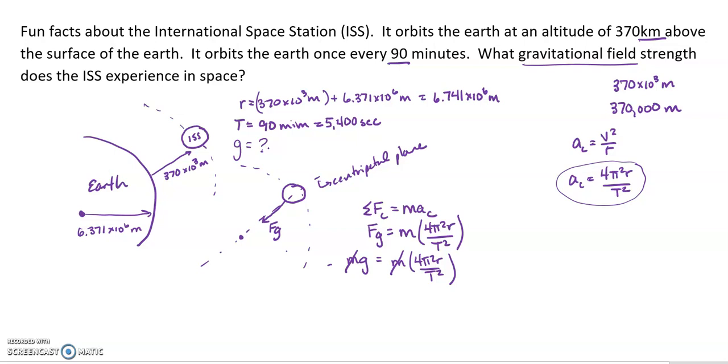So now it's a matter of just subbing everything in. So I now have g equals 4 times pi squared times my radius. Now I have to use the big radius here, because we want the combined radius 6.741 times 10 to the sixth over the period squared. So 5,400 quantity squared. And now it's simply a matter of doing the math. So I'll crunch those into my calculator. You're going to want to use parentheses when you do these. I know it's a few extra button clicks, but it's really worth it. So if you crunch all this stuff, you see that your g value is 9.13 newtons per kilogram.